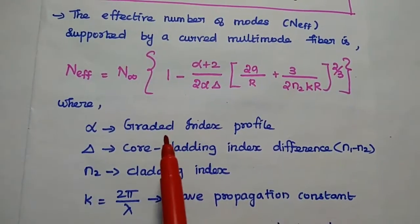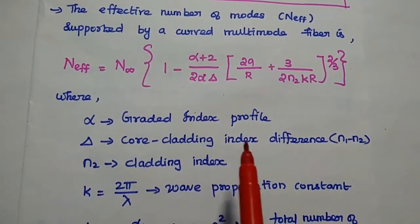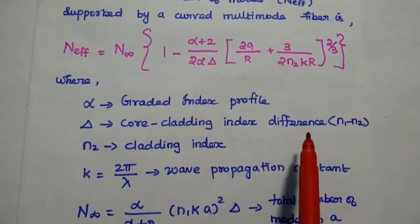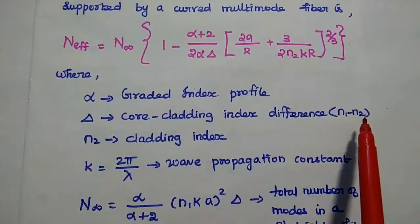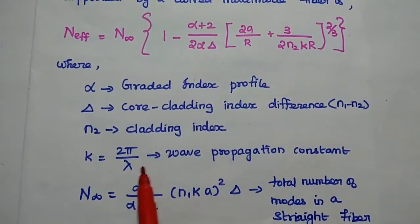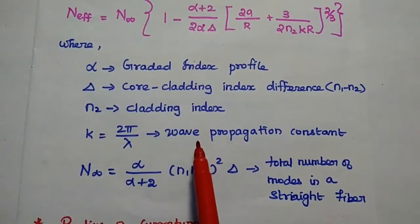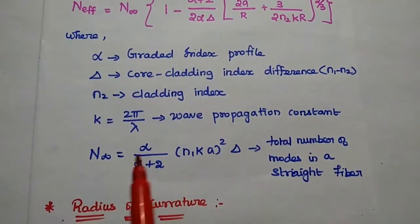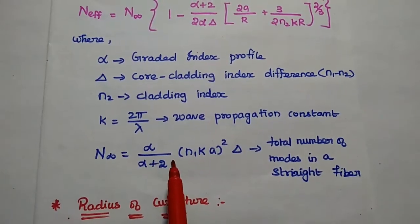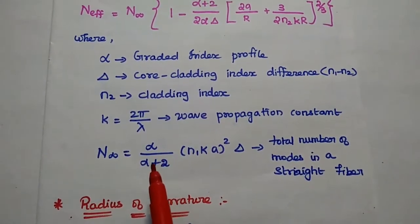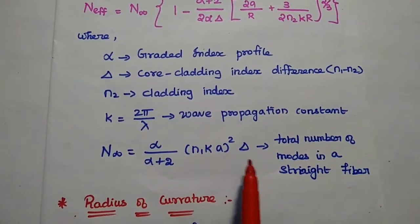Here, alpha is nothing but graded index profile del is the core cladding index difference that is N1 minus N2. N1 is the core refractive index. N2 is the cladding refractive index. K is equal to 2 pi by lambda. That is nothing but the wave propagation constant. Next, N infinite that is the total number of modes in a straight fiber. That is equal to alpha by alpha plus 2 into N1K A the whole squared into del.